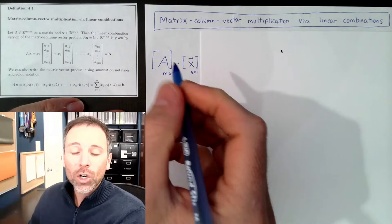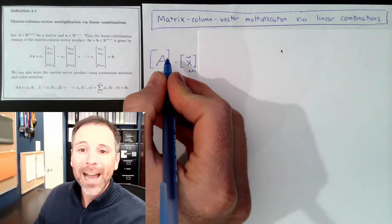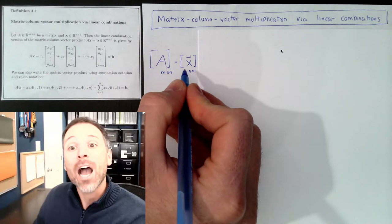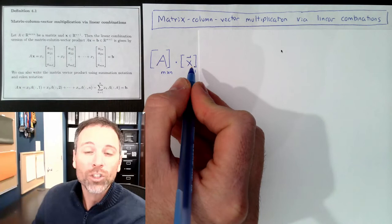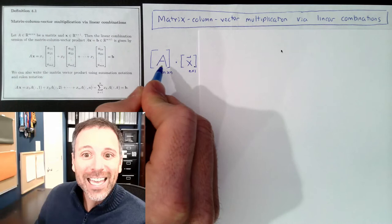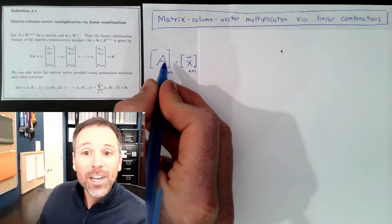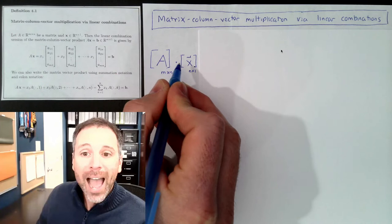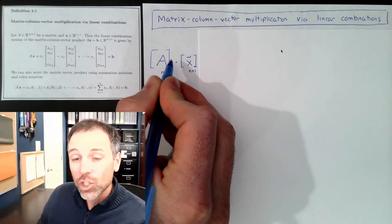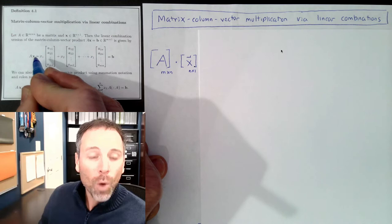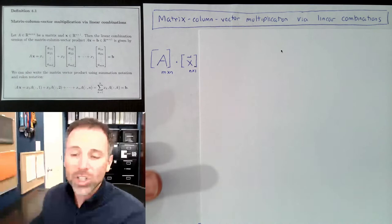One thing to think about: in this product, one of the factors comes from a modeling context, and the other does algebraic work. The matrix A is our modeling matrix — it's the thing that comes from modeling. We're going to think about the vector x as doing algebraic work on A. When the modeling matrix shows up on the left and the algebraic worker is on the right, we cut the modeling matrix into columns.